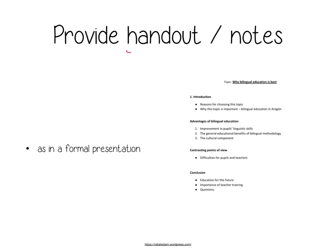First of all, remember you have to give the examiner a handout or some set of notes so that the examiner can see what your points are going to be and the structure of your presentation. You have to do this as in any other formal presentation. For example, you might talk about an introduction, then support your argument — if you're talking about bilingual education, think of the advantages, then show the other side of the argument. Very importantly, you have to reach a conclusion and invite the examiner to ask you questions, and this structure should be clear from the start on the handout.